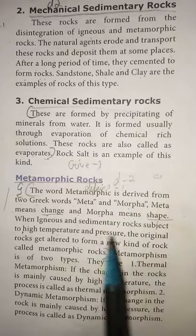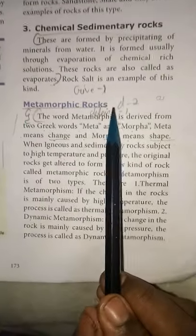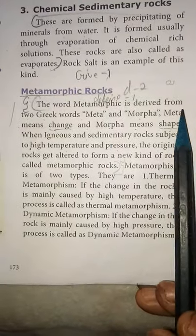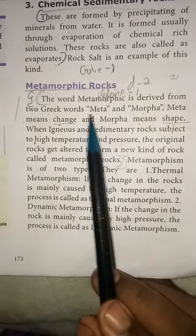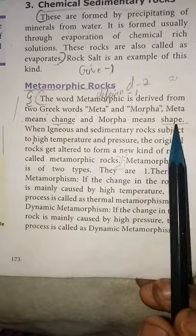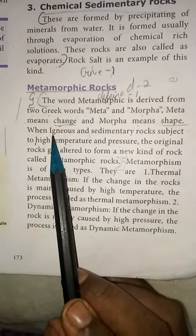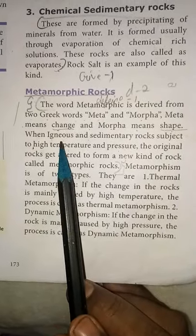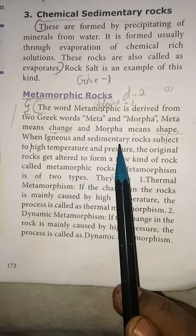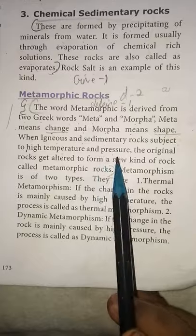The third type of rocks is metamorphic rocks. The word metamorphic is derived from two Greek words: meta means change, and morpha means shape. Igneous rocks and sedimentary rocks are the parent rocks.